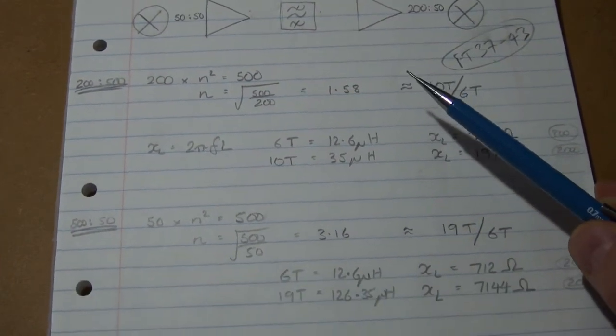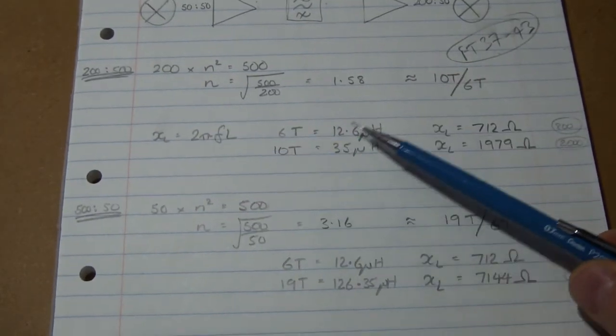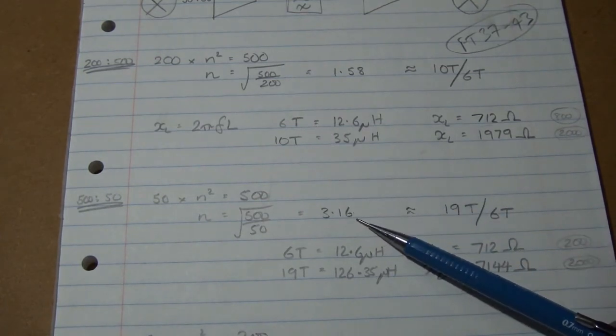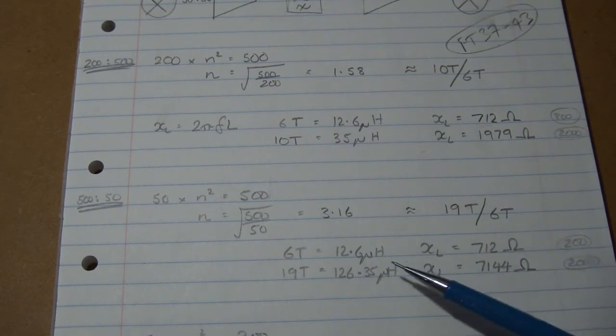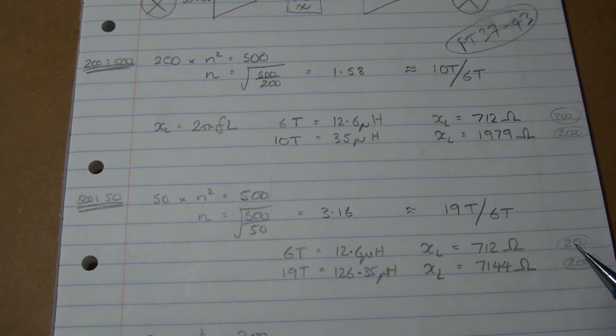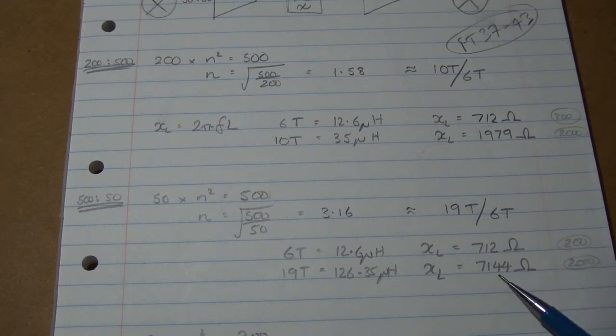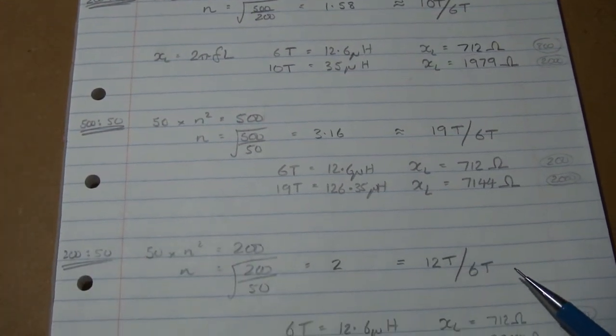For that next transformer, we're looking at 500 to 50. Again, I won't go through exactly the same logic there, gives us a turns ratio of 3.16, which is approximately equal to 19 turns over 6 turns, which gives us then our inductance, therefore our inductive reactance. And here we're in a much better situation here. 50 ohms times 4 is 200, so we're well in excess of that, which is good. And 500 times 4 equals 2000, and we're at 7144. So we're looking pretty good there as well. So we'll live with that.